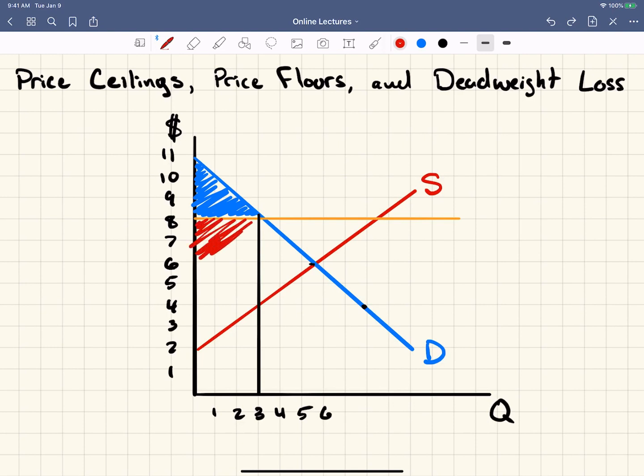Producer surplus goes up to this area because now you have all these people that would have been willing to sell down here for this price, but they get to sell up here at this price. And so this whole area becomes producer surplus. So you can see producer surplus actually got bigger and consumer surplus actually got smaller.